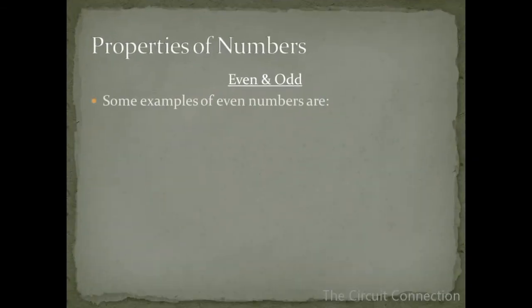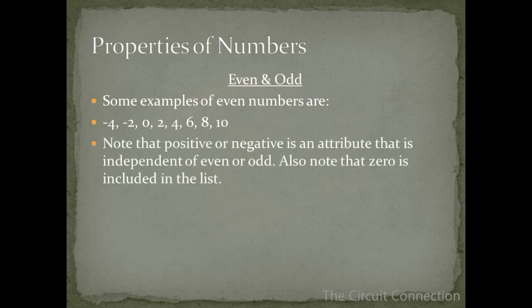So on even and odd, some examples of even numbers are negative 4, negative 2, 0, 2, 4, 6, 8, and 10. Note that positive or negative is an attribute that is independent of even or odd. Also note that 0 is included in this list.